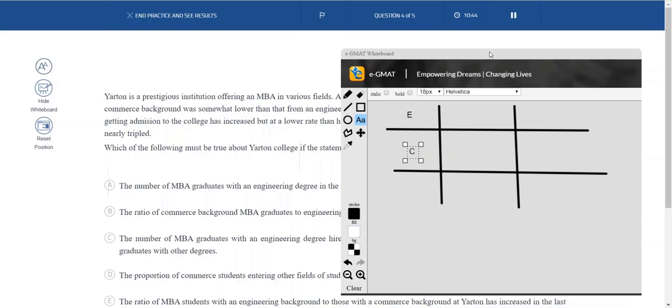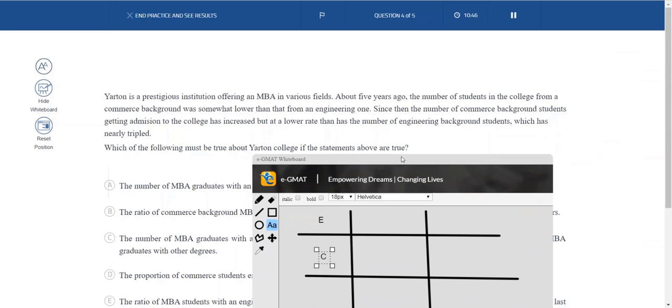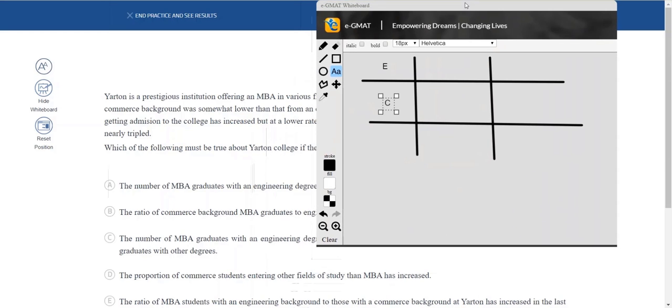And what do we know about the numbers? Yes, engineering has nearly tripled. So let's take engineering as a base. Let's assume engineering is 100. So if it's nearly tripled, say it should have been 300, let's put 290 nearly tripled.